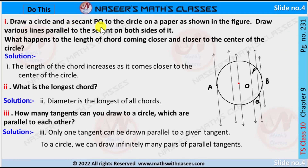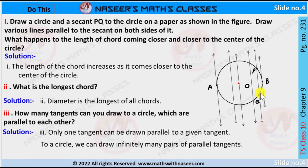Draw a circle and a secant to the circle on the paper as shown in the figure. Draw various lines parallel to the secant on both sides of it. What happens to the length of the chord coming closer and closer to the center of the circle? The center of the circle is drawn and PQ is the secant — if it is coming closer and closer to the center, the length increases.